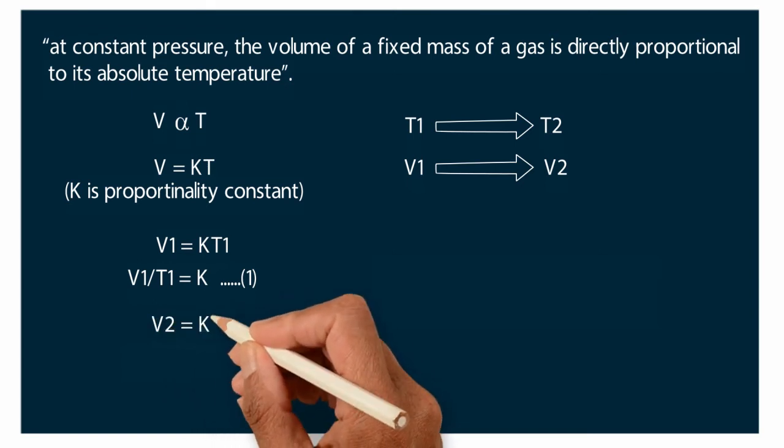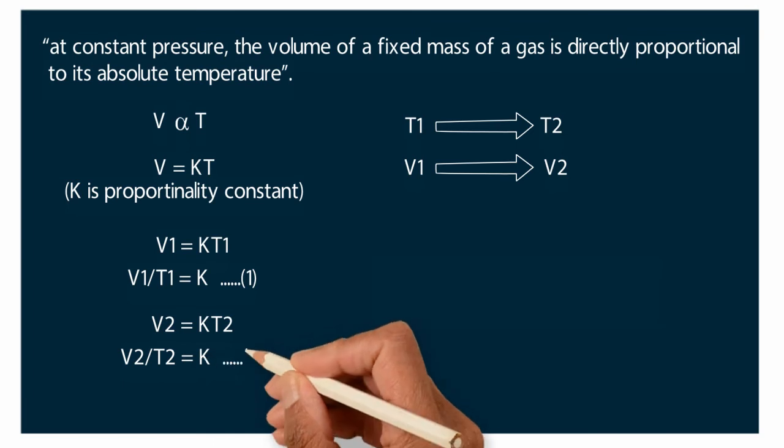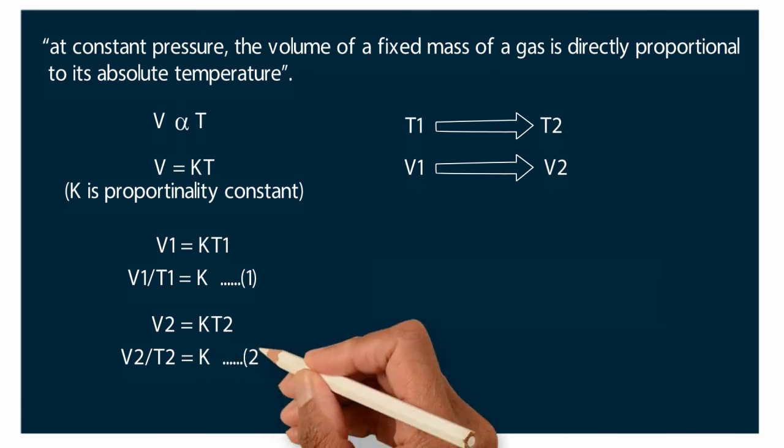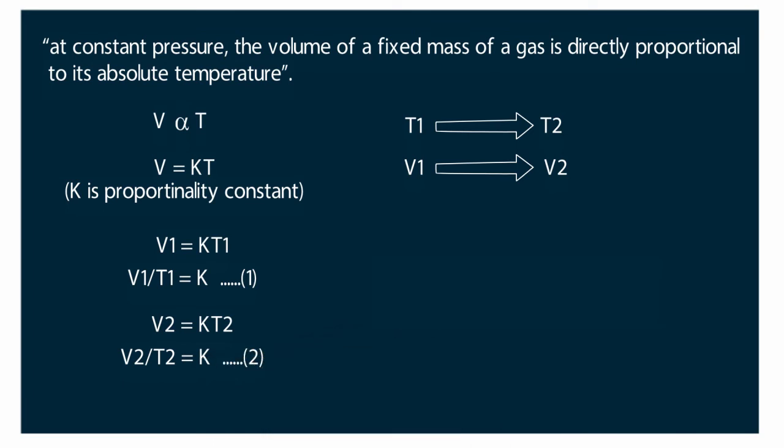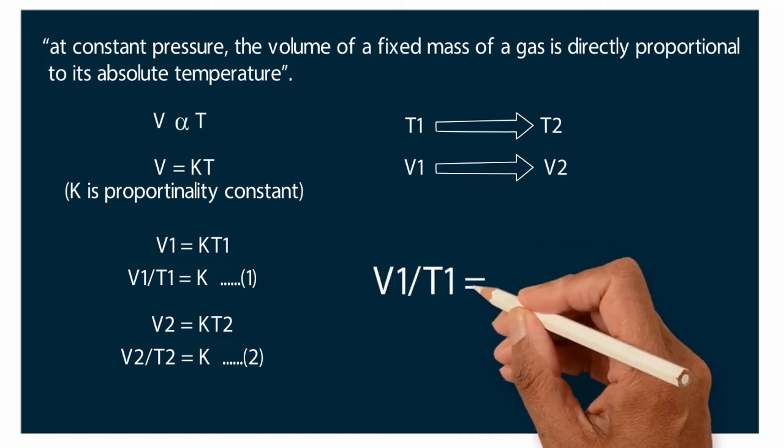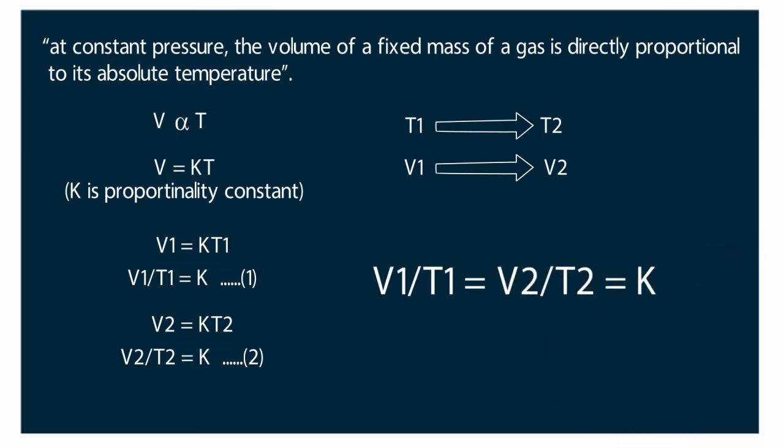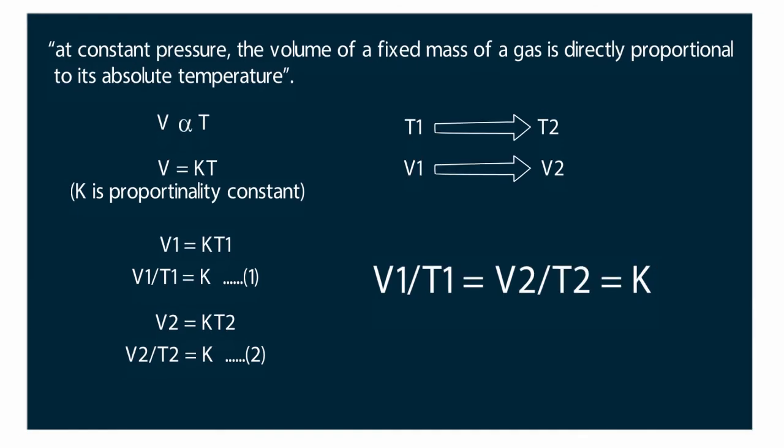Similarly, V2 is equal to K into T2. V2 by T2 is equal to K. Consider this as second equation. From equation 1 and 2, we can say Charles law equation as V1 by T1 is equal to V2 by T2 is equal to K. This is applicable at constant pressure.